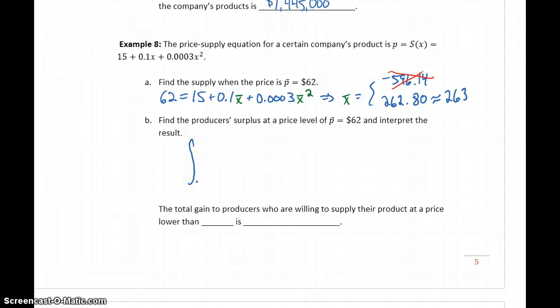So that gives us our value for x bar. To find the producer surplus, then, we'll integrate from 0 to x bar, the 263. And our formula in this case is going to be P bar, so that given price value, minus our price-supply equation. In this case, the parentheses around the second equation are very important. Or, if you wanted to, you could rewrite it by distributing that negative through. But we either need to distribute the negative, or keep those parentheses around this statement, to make sure that we're ending up with the equation that we want, or the formula that we want.